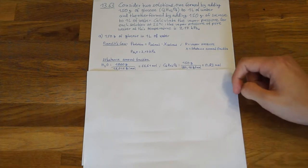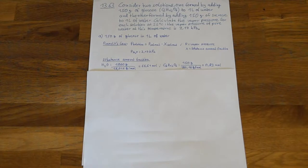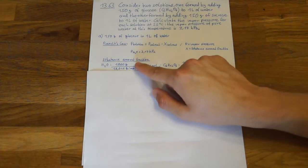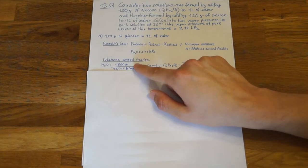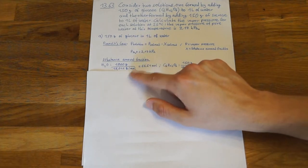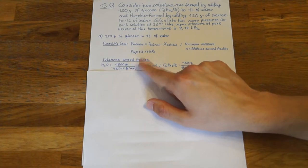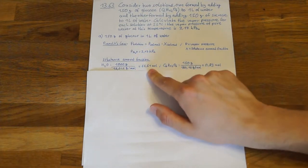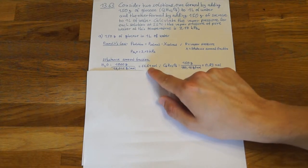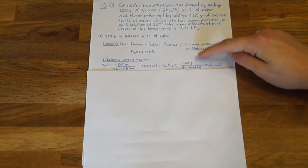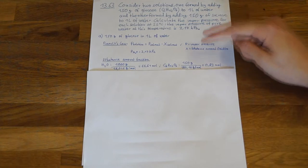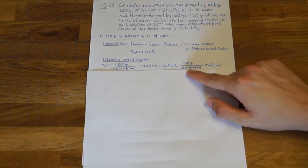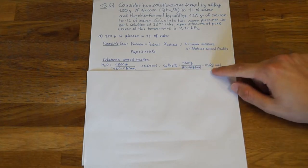The first step is to find out how many moles of each substance are in our solution. As we have one liter of water, we have a mass of 1000 grams. We divide these 1000 grams by water's molar mass, which is 18.015 grams per mole, and we see that we have 55.54 moles of water. We do the same for glucose: 150 grams divided by a molar mass of 180.16 grams per mole, which gives us 0.83 moles of glucose.